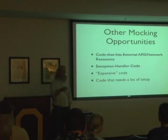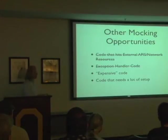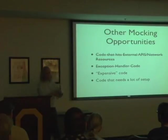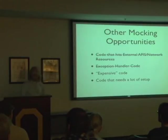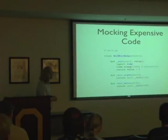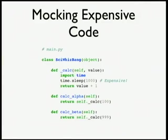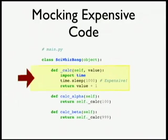Two scenarios so far: hitting third-party APIs and testing exception handler code. The next thing is testing expensive code. When I say expensive, I mean memory intensive, I/O intensive, or time — I might have some code that takes a long time to execute, so I can replace that with mock and just speed up my tests. Here's yet another arbitrary example: imagine I've got this scientific whiz-bang class. It's got the meat of this thing — a really cool science method that might take a little bit of time. This code is actually a little expensive if you run it.